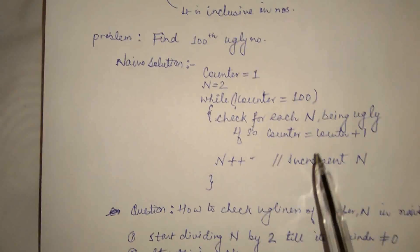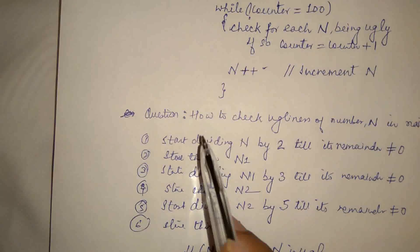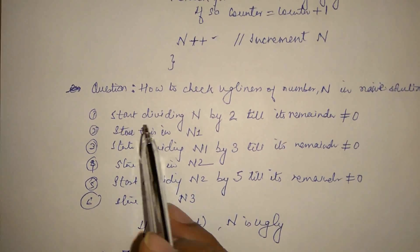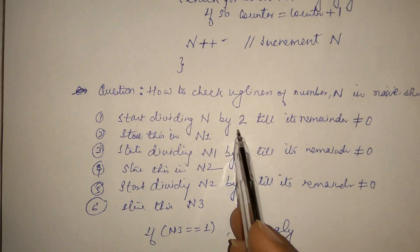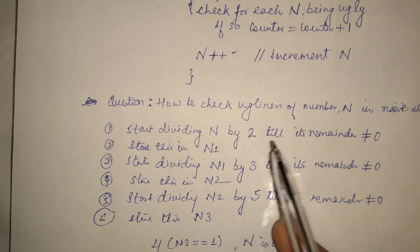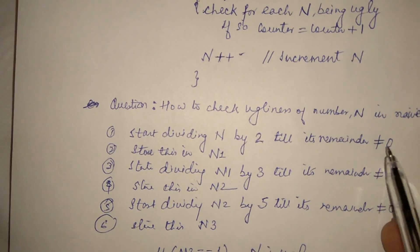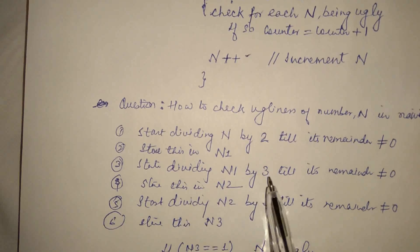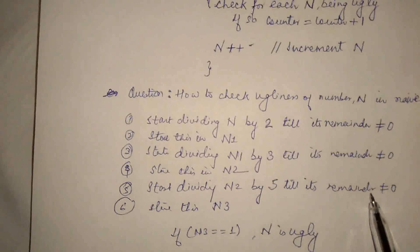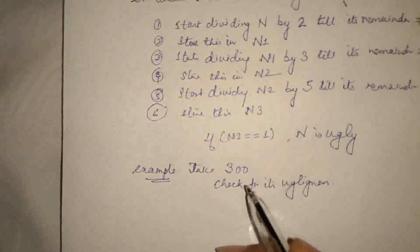How do we check whether each number is ugly or not? In the naive solution, it is a simple method: take the number and start dividing by 2 until its remainder is not equal to zero. Then repeat this process dividing by 3 and store the result in n2, same for 5 and store it in n3. If this final n3 is 1, then the number is ugly.